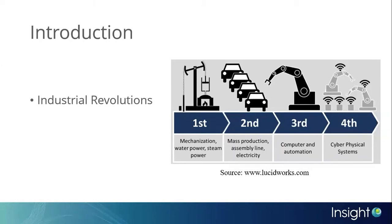Industry has seen four revolutions so far. In the figure, you can see that the first industrial revolution used mechanization tools powered by water and steam energy.